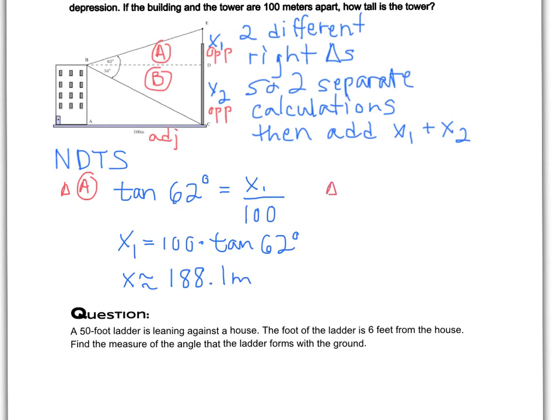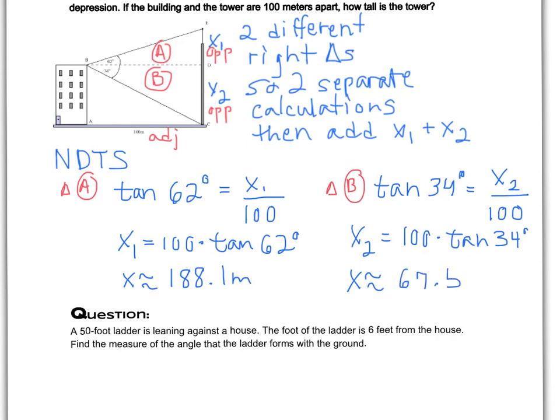Then we also need to do a separate calculation for triangle B, and with triangle B, again we have opposite over adjacent, so that's going to be tangent again, of 34 degrees this time, is going to equal, this time X2, that bottom piece of the height of the tower, over 100 again, that distance doesn't change. Then we have X2 equals 100 times tangent of 34 if we just cross multiply and get that X2 alone. And our X is going to be approximately equal to, on this side, 67.5 meters.